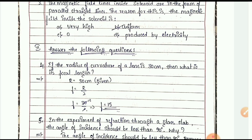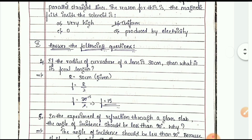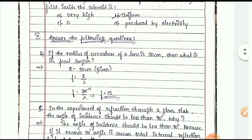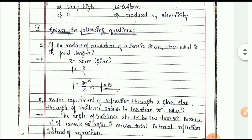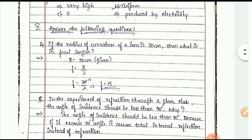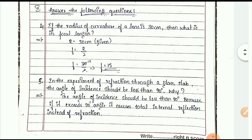Next, answer the following questions. If the radius of curvature of a lens is 30 centimeters, what is its focal length? This type of question is very easy. The radius R is 30 cm. Using the formula f = R/2, f equals 30/2, so f equals 15 centimeters.